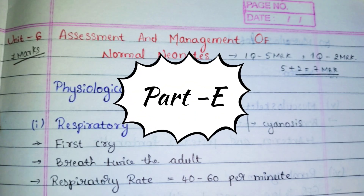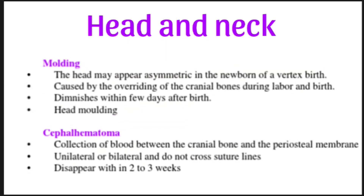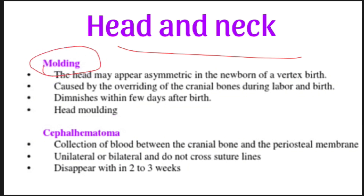Welcome back to the channel. It's Unit 6, Part E: minor disorders of the newborn — minor in the sense of small problems. First, we look at head and neck. There can be molding, where the head may sometimes be in an asymmetric way with a slight bulge. This can be fixed by just molding.